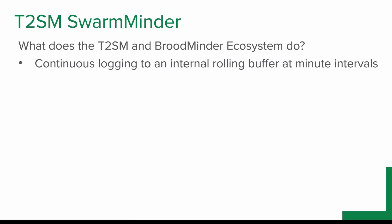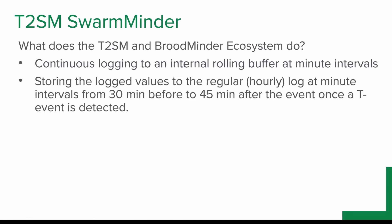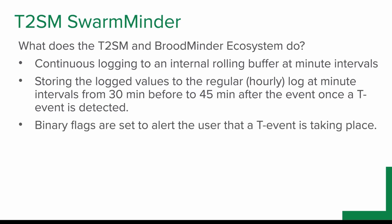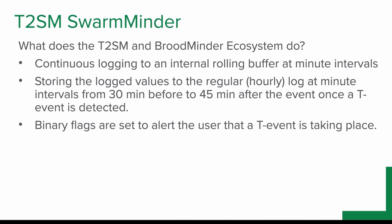The T2 SwarmMinder logs to a rolling buffer at minute intervals. It stores the log values to the hourly log at minute intervals from 30 minutes before the event to 45 minutes after the event once we know we have an event. Binary flags are set to alert that the temperature event is taking place, and this is used to send an email or text message to the beekeeper saying something's going on.